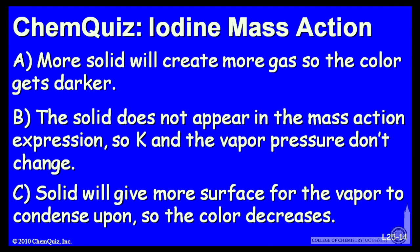Let's look at a possible explanation for each answer. A, more solid will create more gas, so the color gets darker. B, the solid does not appear in the mass action expression, so K and the vapor pressure don't change. Or C, solid will give more surface to the vapor, and it will condense, so the color decreases. Think about those three possible explanations and make a selection.